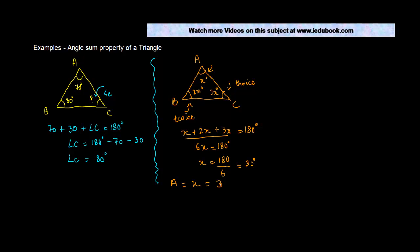B is equal to 2x, which is 2 times 30, which is 60 degrees. C is equal to 3 times x, which equals 3 times 30, which is 90 degrees.